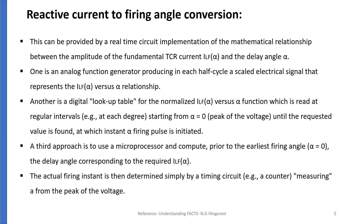There are two other approaches. The second is a lookup table for normalized ILF of alpha versus alpha function, which is read at regular intervals starting from alpha equal to zero until the requested value is found, at which instant the alpha firing pulse is initiated. The third approach is to use a microprocessor to compute, prior to the earliest firing angle, the delay angle corresponding to the required ILF of alpha. The actual firing instant is then determined simply by a timing circuit measuring from the peak of the voltage.